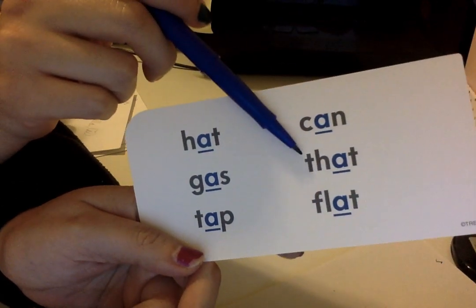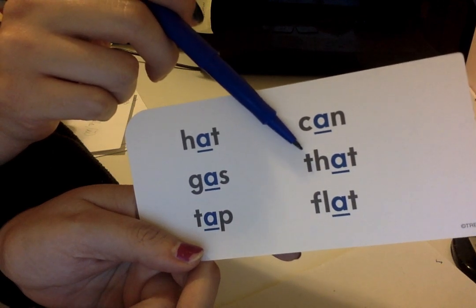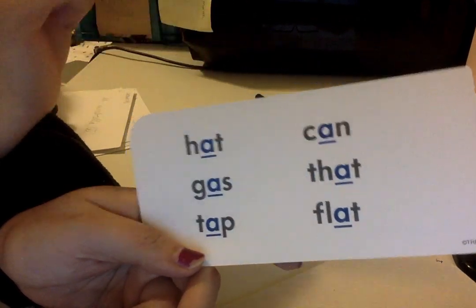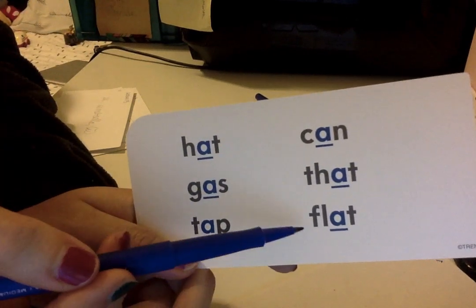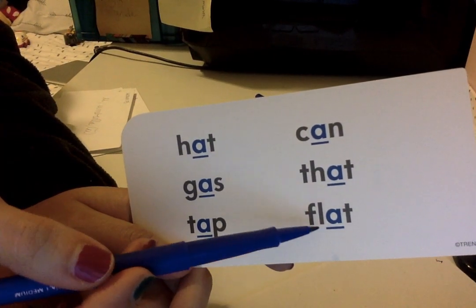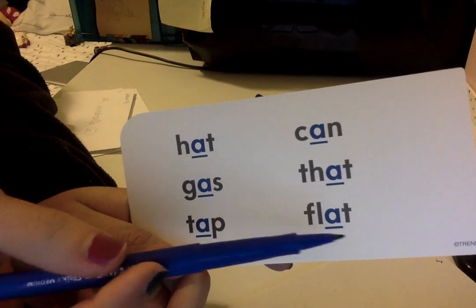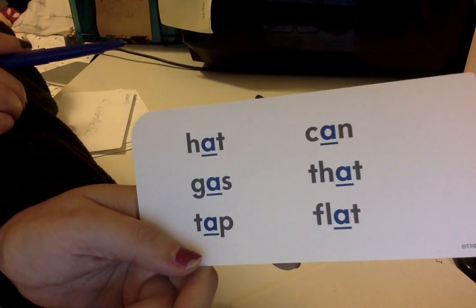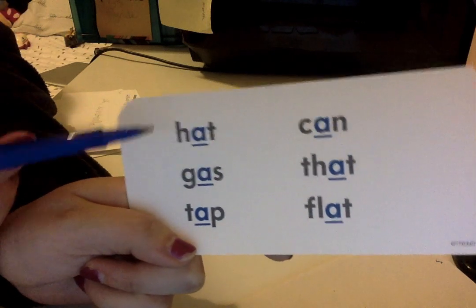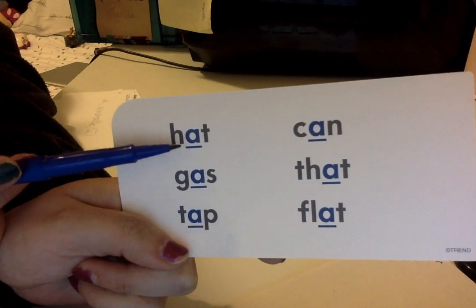This is a digraph — two letters that make one sound. Can. G-A-T — the last one. Good job! These words all have the vowel sound 'ah' for apple.